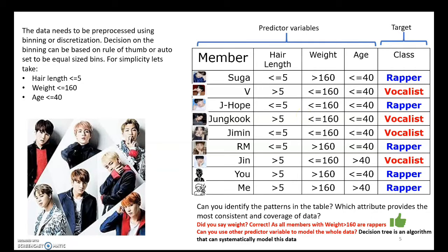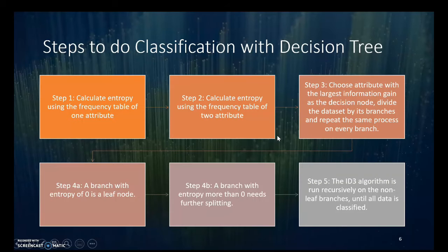Can you identify the patterns in the table? Try to find the pair between each predictive variable and the target — hair length and class, weight and class, and age and class — or even pairs of predictor variables. You might spot that everybody who weighs more than 160 is a rapper. Decision tree provides a systematic approach to identify the relationship of other variables as well.